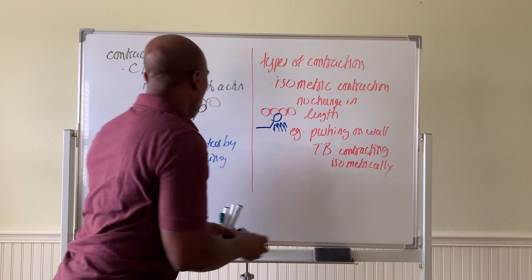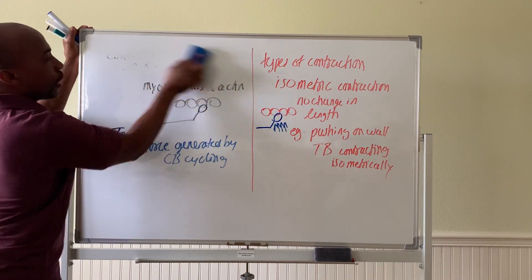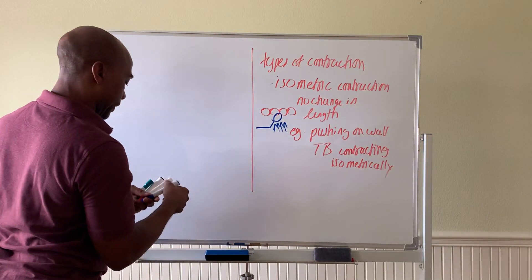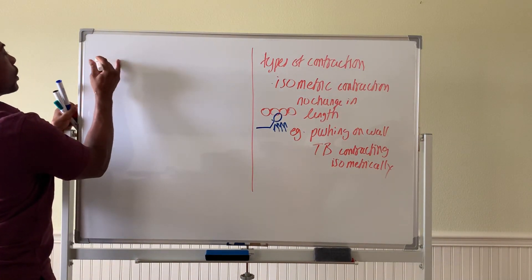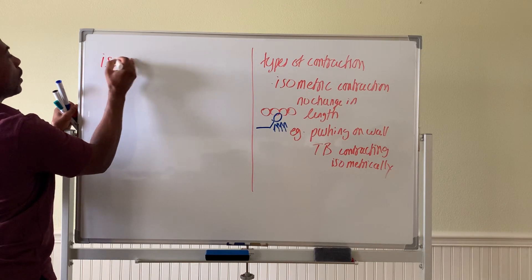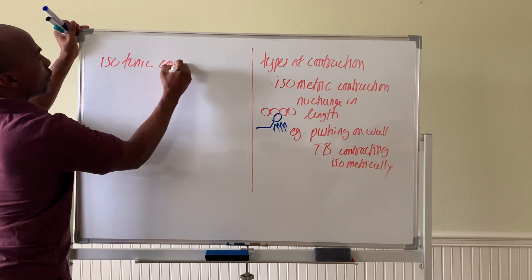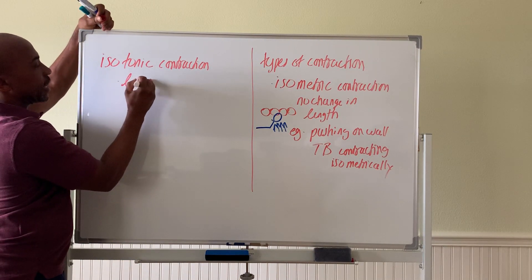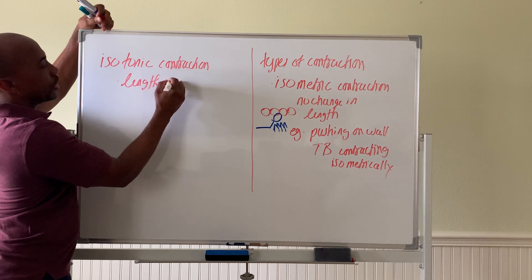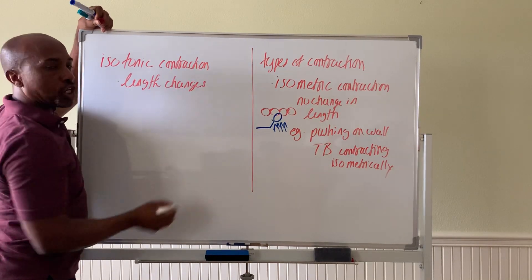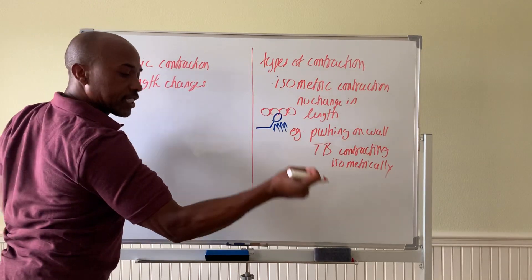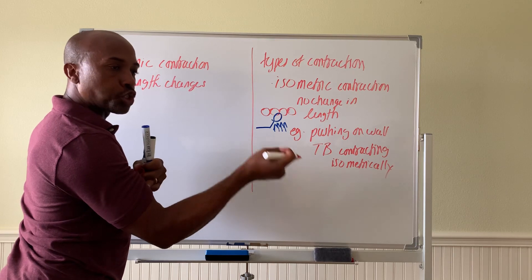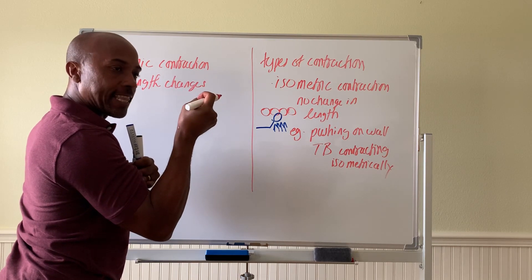The other type is called isotonic contraction, which involves the same tension but the muscle changes length. In isotonic contraction, the length changes as the muscle contracts — like flexing your forearm, where the biceps brachii muscle gets shorter as it contracts and changes length. There are two forms of this contraction.